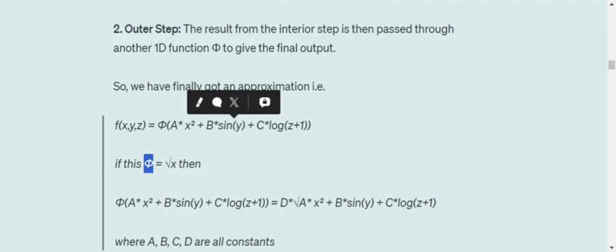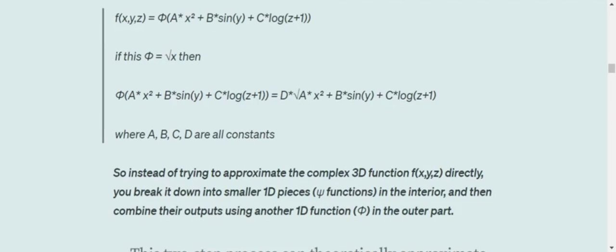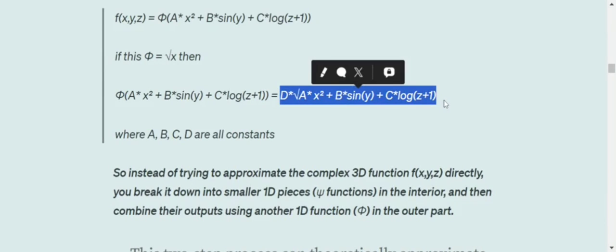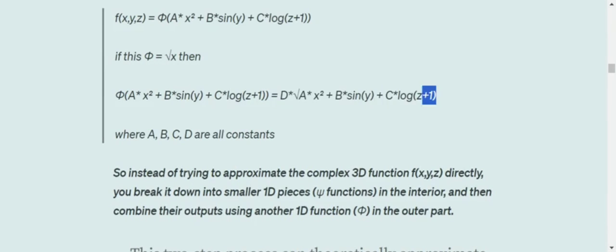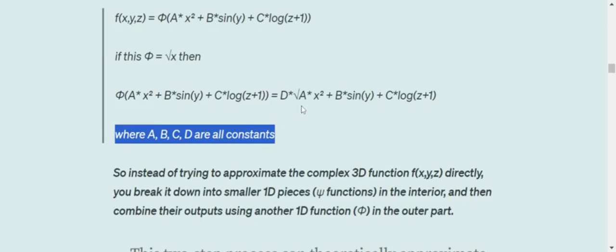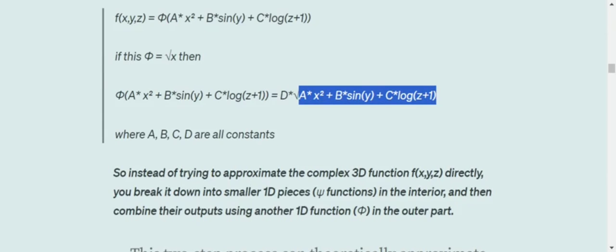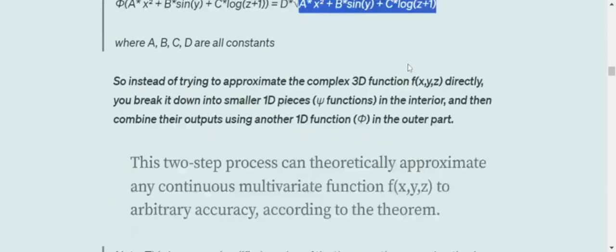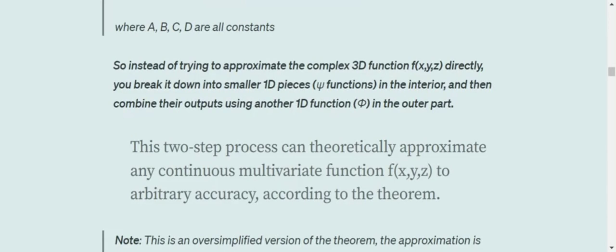Where, for example, if this particular function is root x, so the final approximation would look something like this: d into under root of the whole of output that we got from the first interior step. That is a summation of x square plus sine y plus log z plus 1, where a, b, c, d are all constants. So this was just a very layman example.